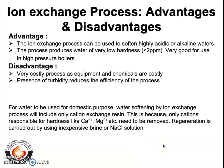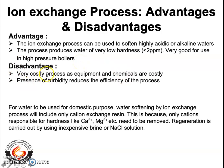Now let us look at the advantages and disadvantages of the ion exchange process. The advantages are: the process can be used to soften highly acidic or alkaline water; it removes hardness to a level of less than 2 ppm, giving absolutely soft water; and it is very suitable for use in high pressure boilers. The disadvantage is that the process is very costly, as the equipment and chemicals used are always expensive.